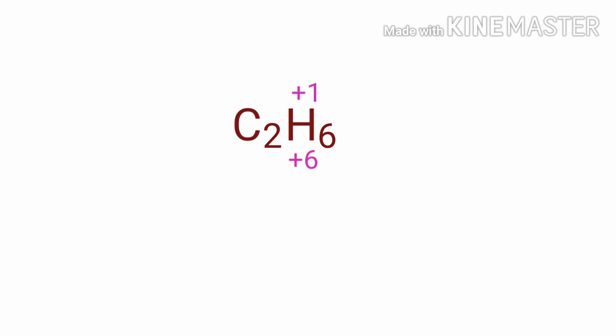So the number under C2 must be minus six. In the C2 element, there are two carbon atoms present, so we can write the oxidation number of carbon is minus three.